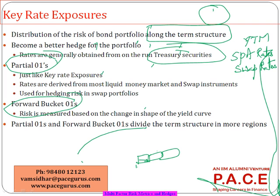The forward bucket approach is based on the forward rate curve derived from the yield curve. For example, the forward rate between zero and one year is a certain rate, between one and two years it might be 9 percent, between two and three years 9.5 percent. From the spot rate curve we derive a forward rate curve. When using these forward rates as the discounting factor for all maturities within a specific bucket — say between one and two years — I call that a forward bucket 0.1. All these approaches are essentially breaking down the whole bond portfolio into various maturity buckets to find the duration for each.